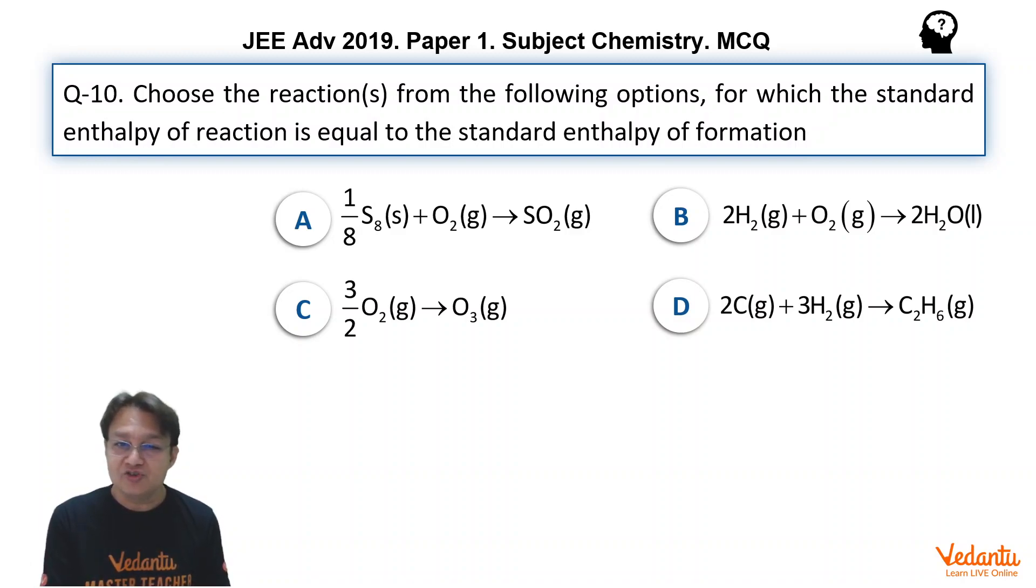Although, if it is mentioned rhombic, that's great. But it's not mentioned rhombic here. Still, we can think of it as the most stable state. O2 is, of course, gas in the most stable state and is forming SO2. So, option A is perfectly alright and it qualifies for enthalpy of formation.